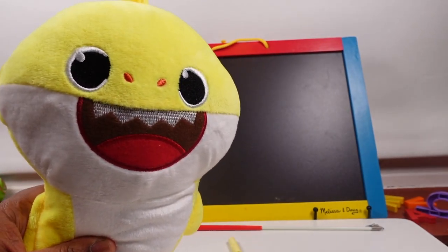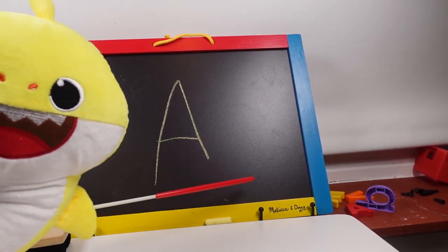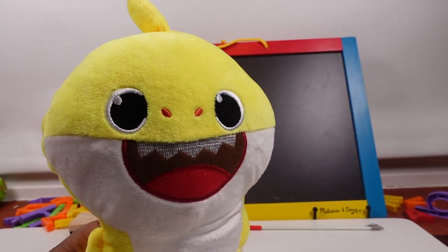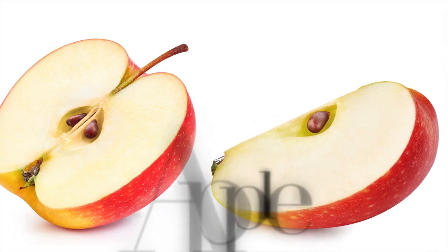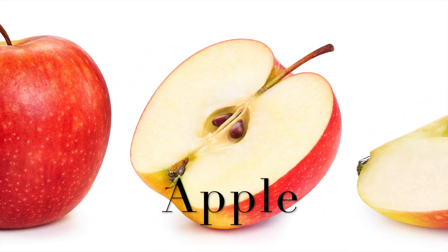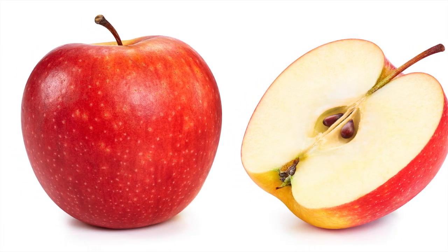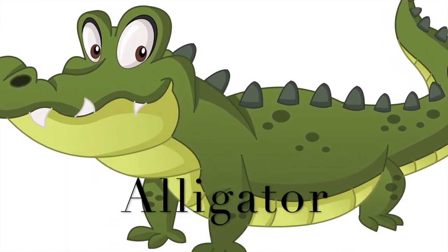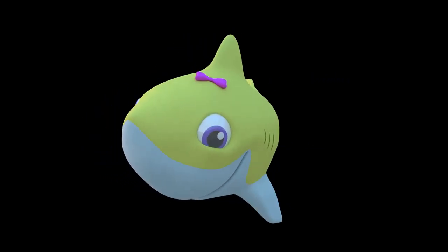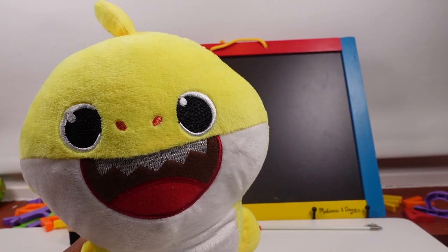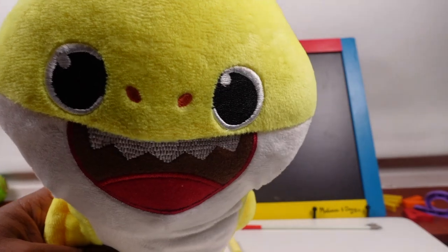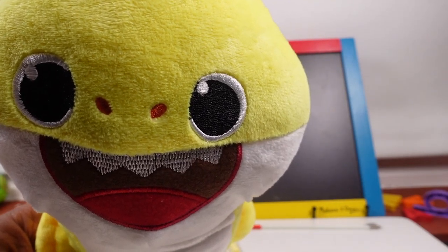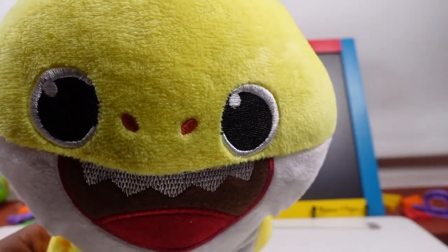Hello friends! Today let's talk about the letter A. A is for apple. A is for alligator. A is for ants. A is for acorn.